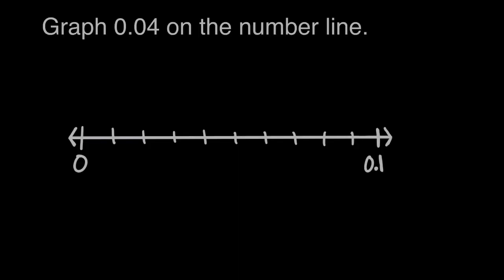So looking back at the number line, now we know that this distance, a tenth of our tenth is a hundredth. And we want to graph 0.04. Well this 4 right here, this 4, let's think about place value,